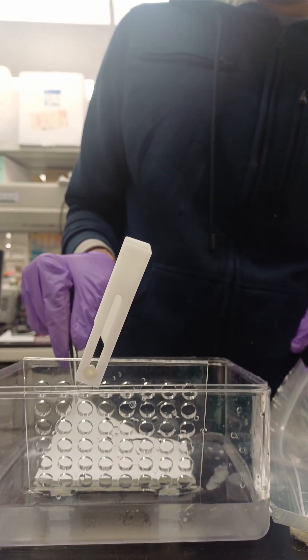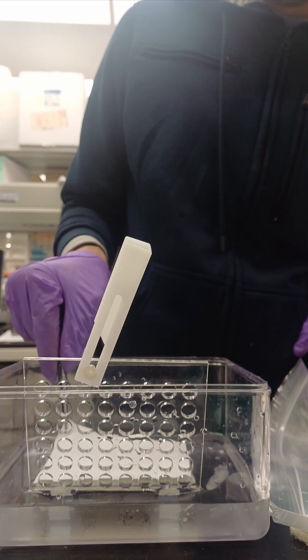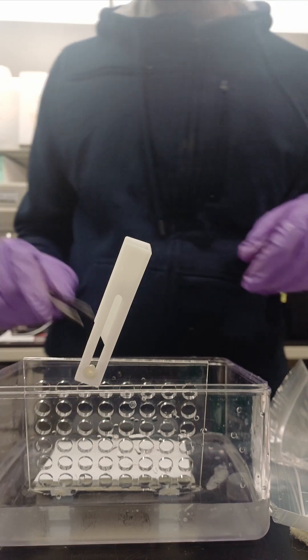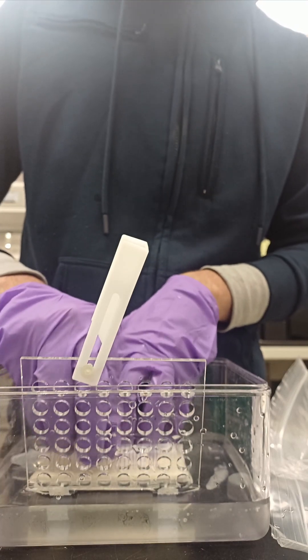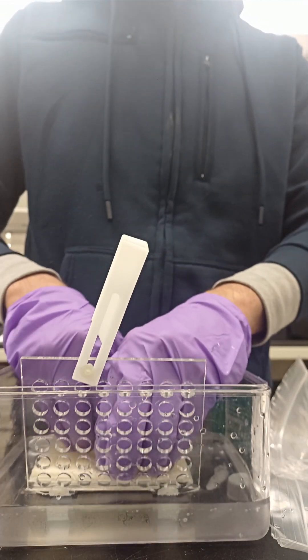Most important is to not touch the membrane directly even with gloves. Use a forcep and handle only at the edges. Layer at last again with filter paper and foam. Use a roller or a falcon tube to remove air bubbles. This step is super important.